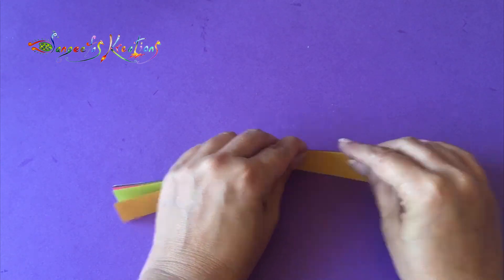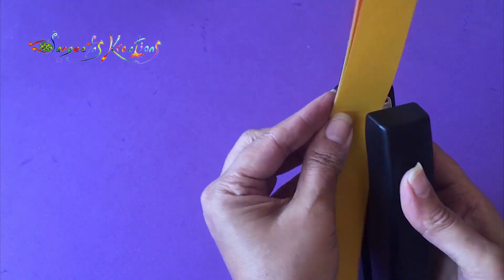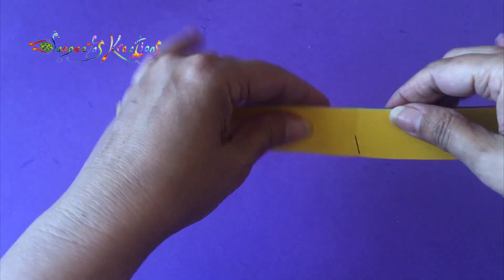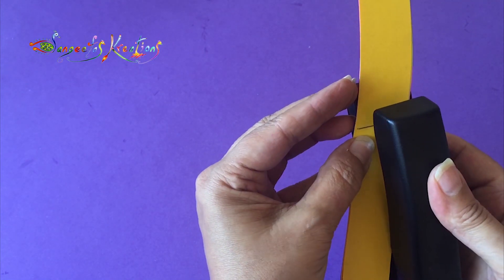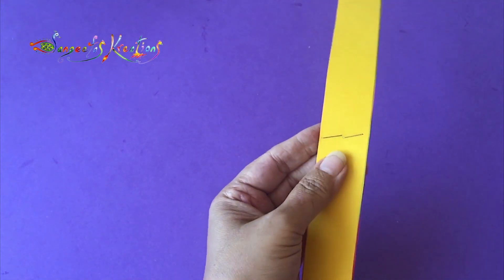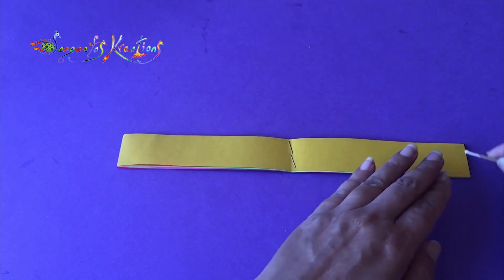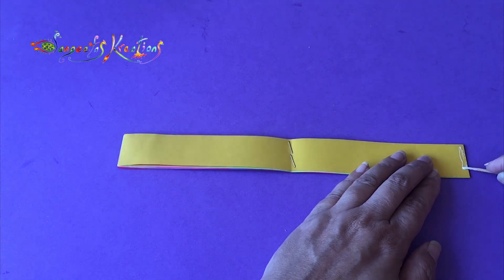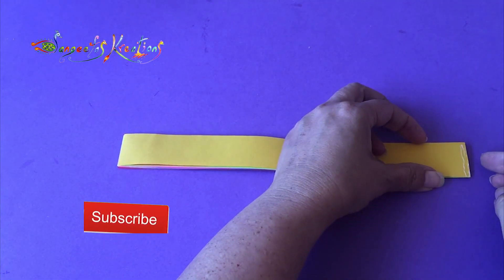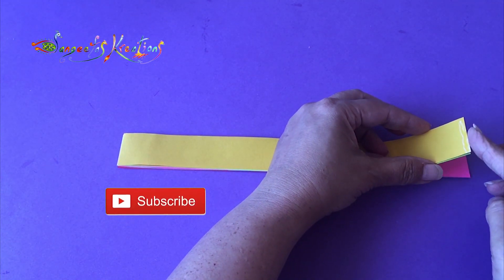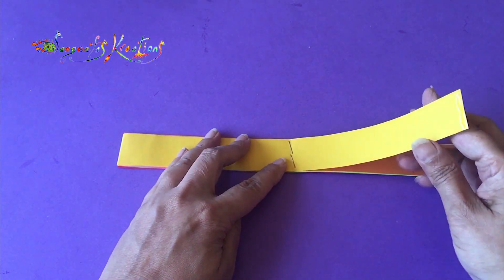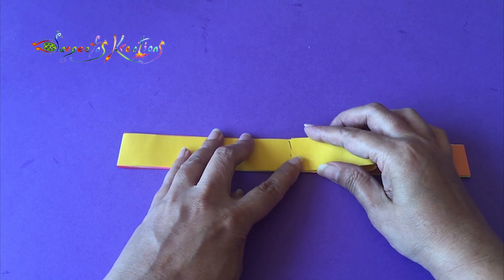Now take a stapler and staple it in the middle this way. Take white glue, apply glue to the top of the right edge of the strip of paper and paste the edge of the strip in the middle.